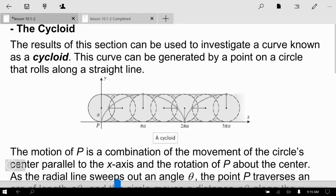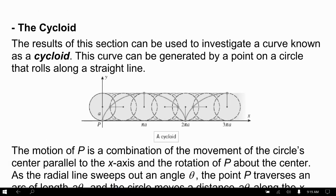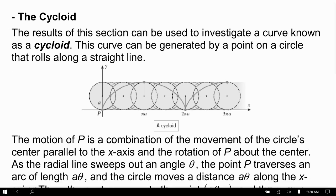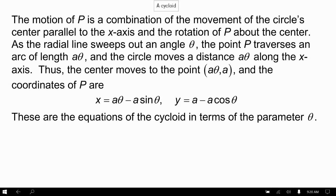In your homework they'll probably refer to something called a cycloid. A cycloid is a set of parametric equations that models this scenario: if you have a point on a circle and roll that circle along the x-axis, tracing the path of where that point goes as the circle rotates creates a cycloid. This is the standard equation for a cycloid — you don't have to memorize it, but understanding what it is will help you work through any related homework problems.